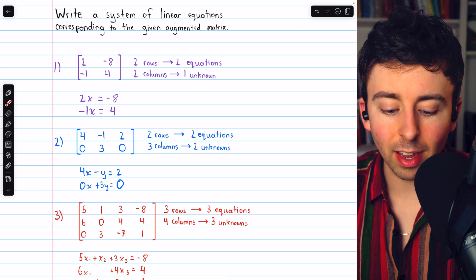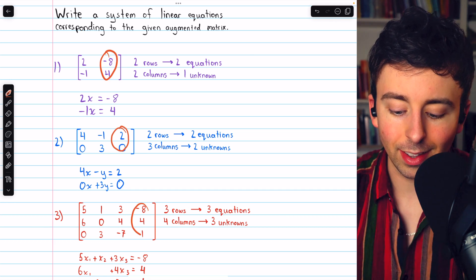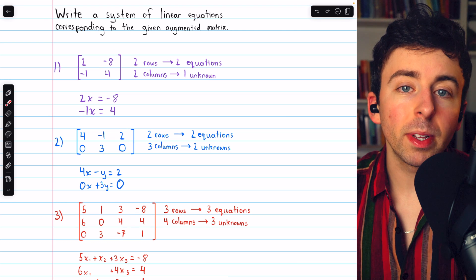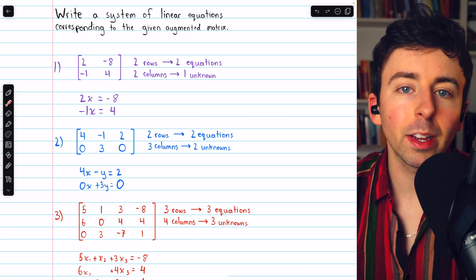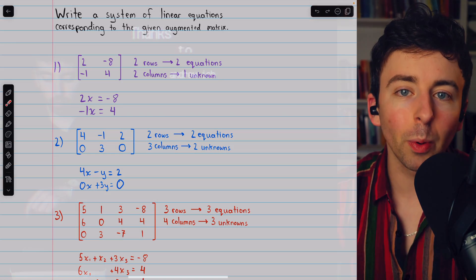Note that in all of these examples, there was a column representing the constants. Let me know in the comments if you have any questions, and be sure to check out my linear algebra course and linear algebra exercises playlists in the description for more. Thanks for watching.